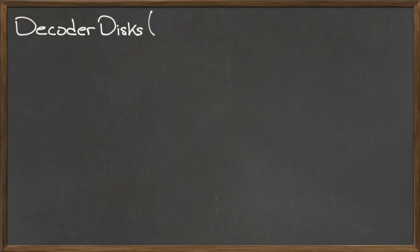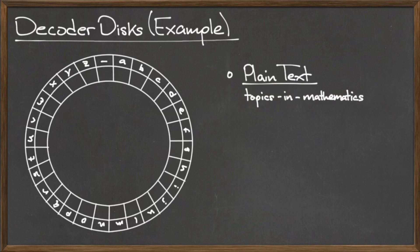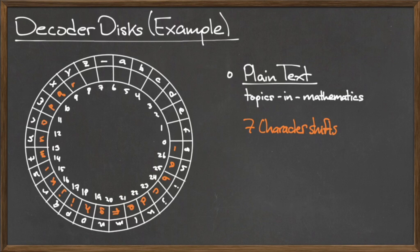To illustrate this encryption process, let's do an example. Let's say we wanted to encrypt the plaintext message Topics in Mathematics with a Caesar cipher with a shift by 7 characters. Remember that the dash in the Topics in Mathematics phrase is indicative of a space. To perform the encryption, we first turn the inner dial of our decoder disk 7 spaces clockwise.